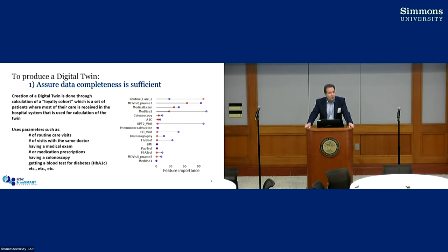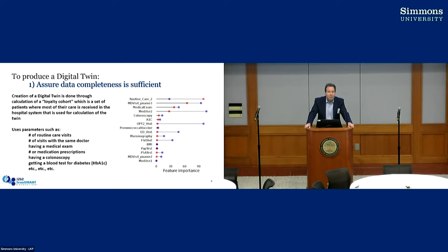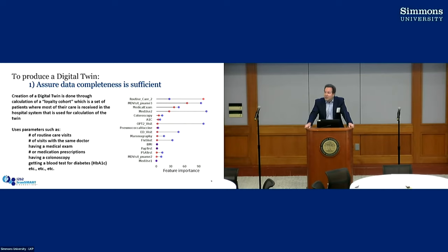We've been focusing on something called the loyalty cohort — a set of patients where most of their care is received in the hospital system, used to calculate the twin. We look for various characteristics that would define someone coming back to the system and interacting with it: how many routine care visits do they have, visits with the same doctor, did they have a medical exam, how many prescriptions did they have, did they have a colonoscopy, are they getting tested for diabetes — the kinds of things you would expect most patients to have. We fit those using sophisticated models to understand how to extract from those variables who is essentially getting most of their care, and we have complete data for that set of patients.